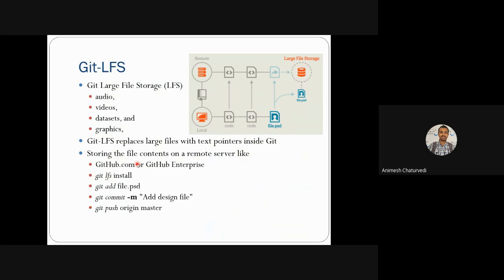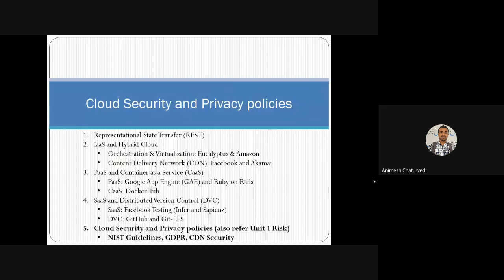For storing files on a remote server you can use github.com, GitHub Enterprise, or Git LFS for installation. The commands used are: git add <file> to add a file, git commit to commit the file, and git push origin master to push the file. These are the features and commands for adding, committing, and pushing a file. Next, we'll see cloud security and privacy.